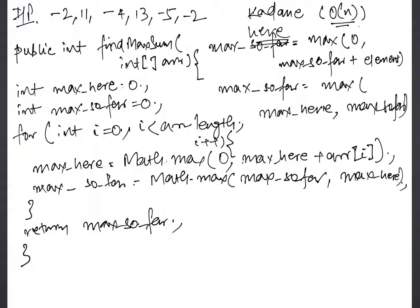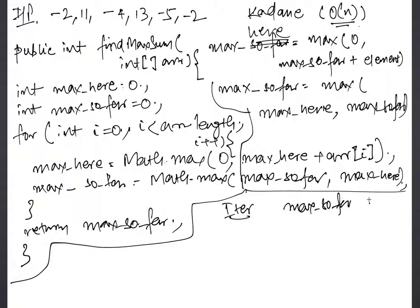To know how it works, let's do a small dry run. In the first we make three columns here. One is our iteration, second is max_so_far, and third is max_here.